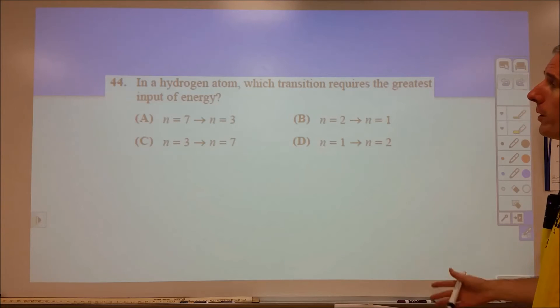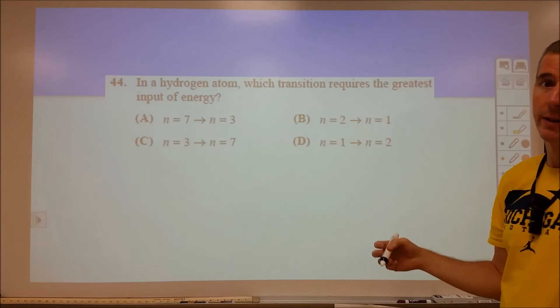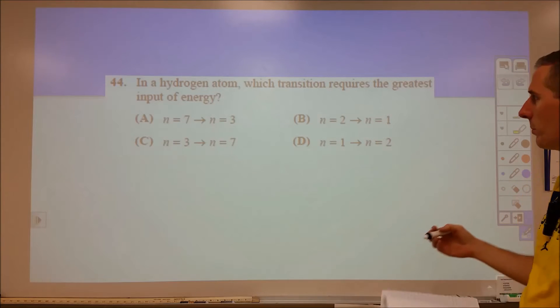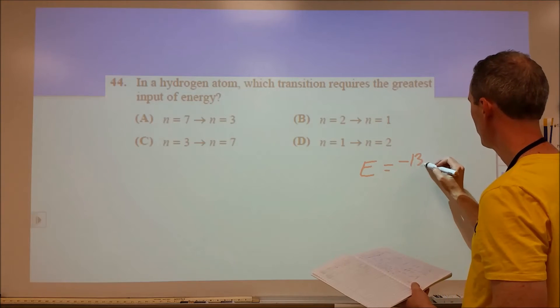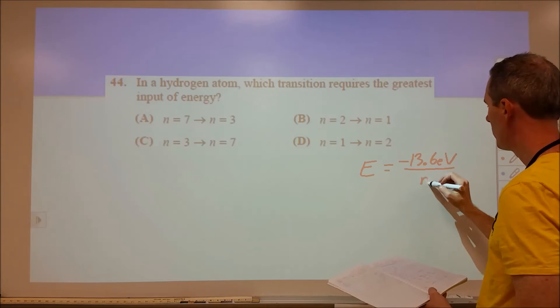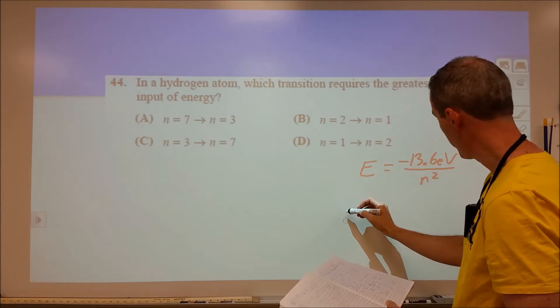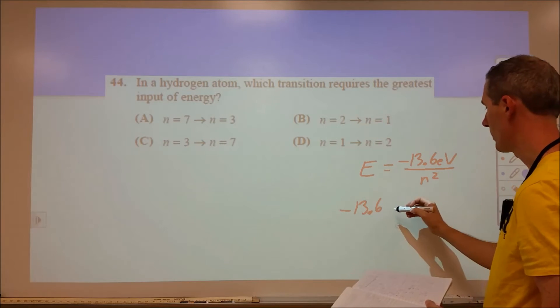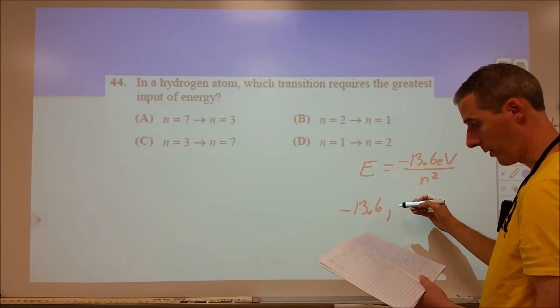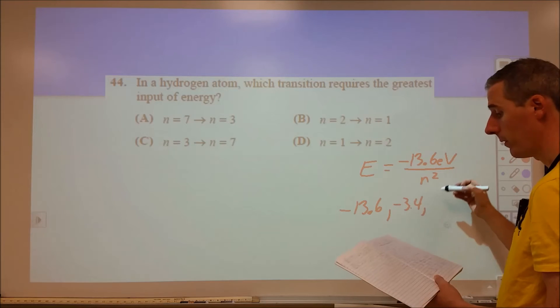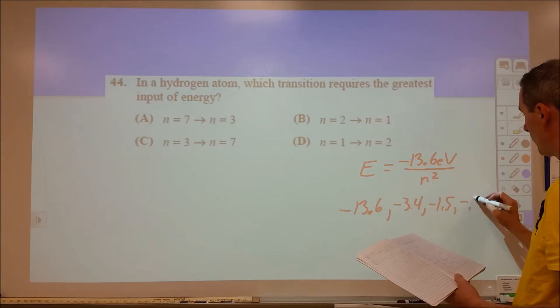Question 44, the key here is that as you move up in energy levels, they become closer spaced. There's a simple representation of that. The energy in a hydrogen atom is equivalent to negative 13.6 electron volts divided by N squared for each energy level. If we plug in N equals 1 for the first energy level, we get negative 13.6 electron volts. For N equals 2, we divide that by 4, so negative 3.4. If we divide by 9, we get negative 1.5. If we divide by 16, we get negative 0.85.